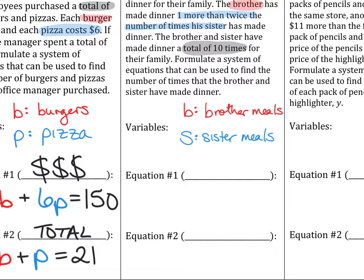Keep going. The brother and sister have made dinner a total of 10 times. There's that total. We like that total because it tells me what I'm looking for. We still need to write two equations from the two sentences. But this one I don't have a bunch of money numbers. I have a comparison. So let's write our comparison equation first. We're comparing the brother to the sister. It says the brother has made dinner one more than twice the number of times the sister has made dinner.